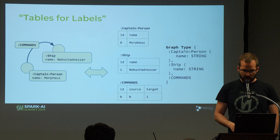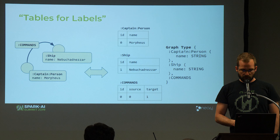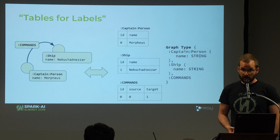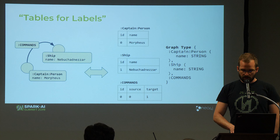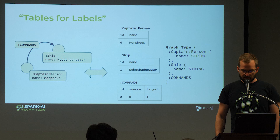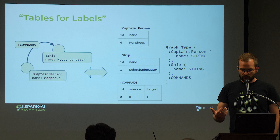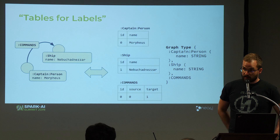In an example graph: node Morpheus is connected to a ship Nebuchadnezzar which he commands. We have two node tables — one for nodes with labels Captain and Person, another for nodes with label Ship — and a relationship table for the relationship type 'commands.' Rows contain the data, with system-specific columns for IDs, source, and target connecting nodes to the relationship. A JSON-like representation of the graph type shows that Captain-Person nodes have a property 'name' of type String. We support all Cypher types from Neo4j. The use of two labels highlights that nodes can have multiple labels — all rows in the Captain-Person table have exactly those two labels.